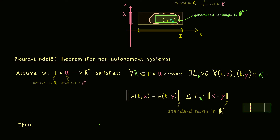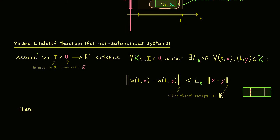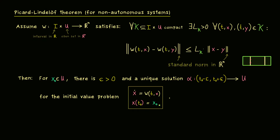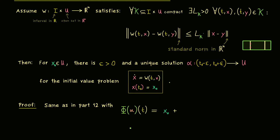If we zoom into a compact set we find a Lipschitz constant such that the Lipschitz condition is satisfied in the second argument. With that we get the same result as in our original Picard-Lindelöf theorem — namely that we have a unique solution of our initial value problem. For a given x0 in U, we find an epsilon and a unique solution defined on this interval such that our initial value problem is solved. Moreover, we can always extend such a solution to a maximal solution. The proof works exactly the same as in part 12.